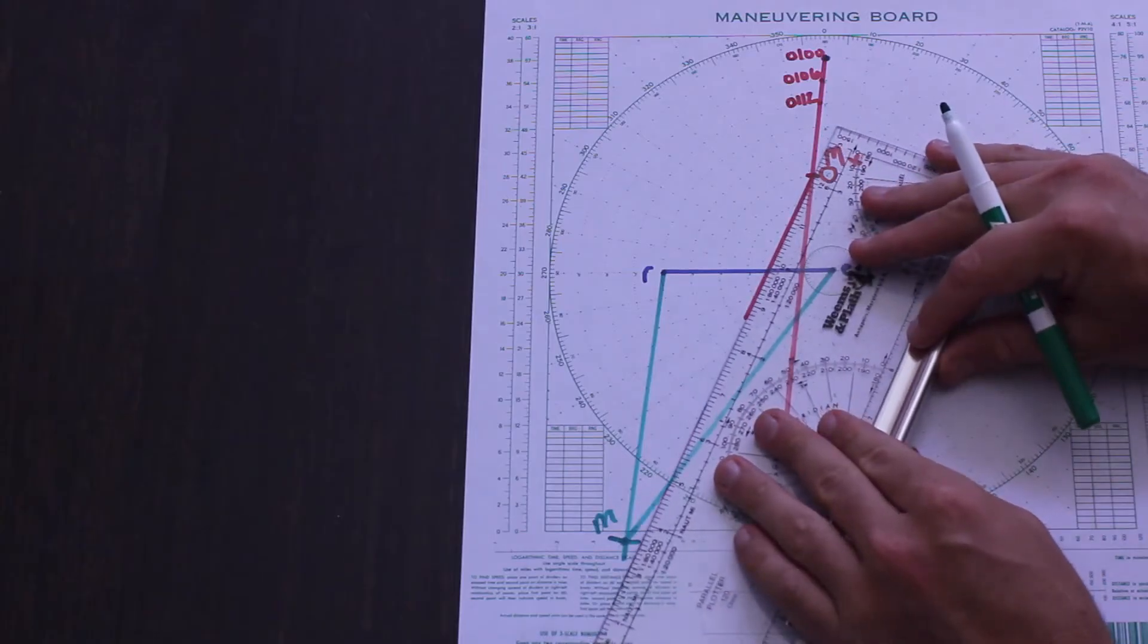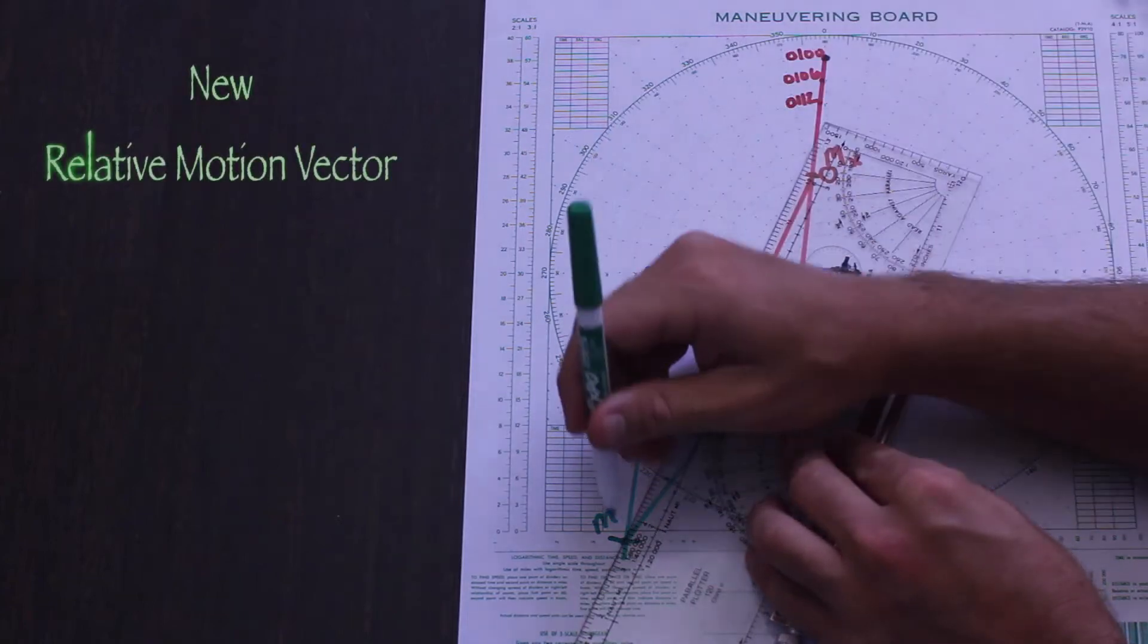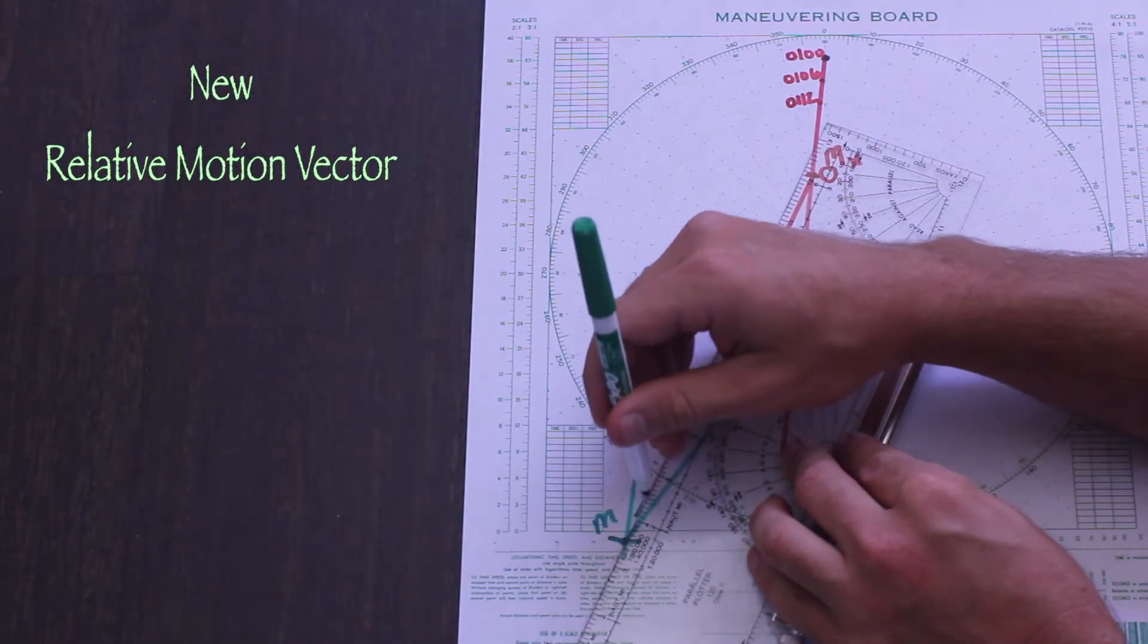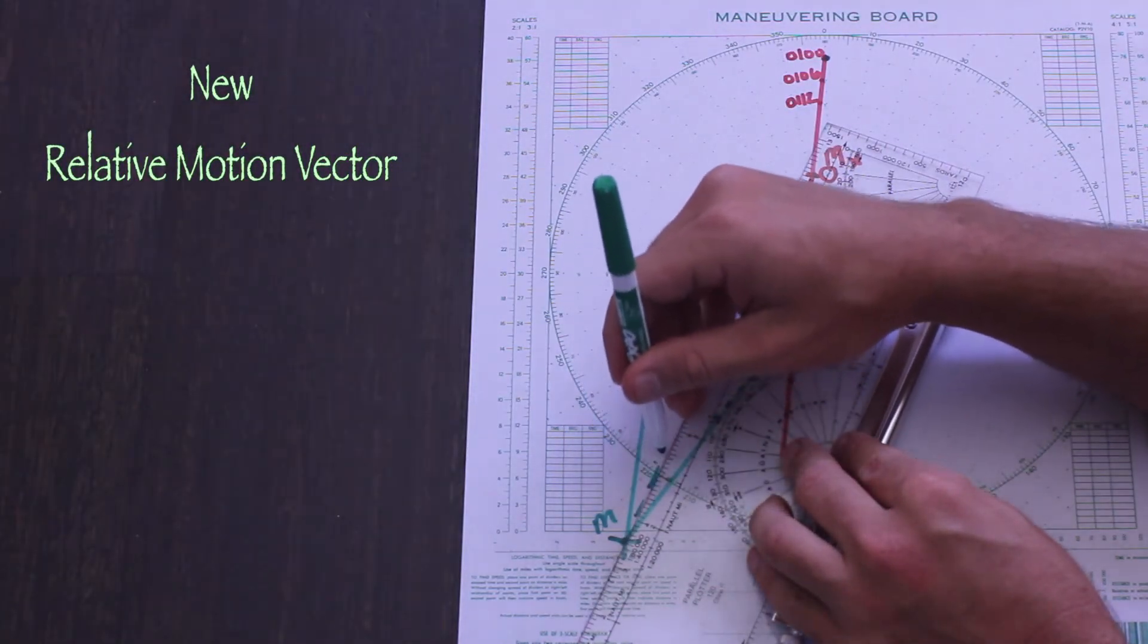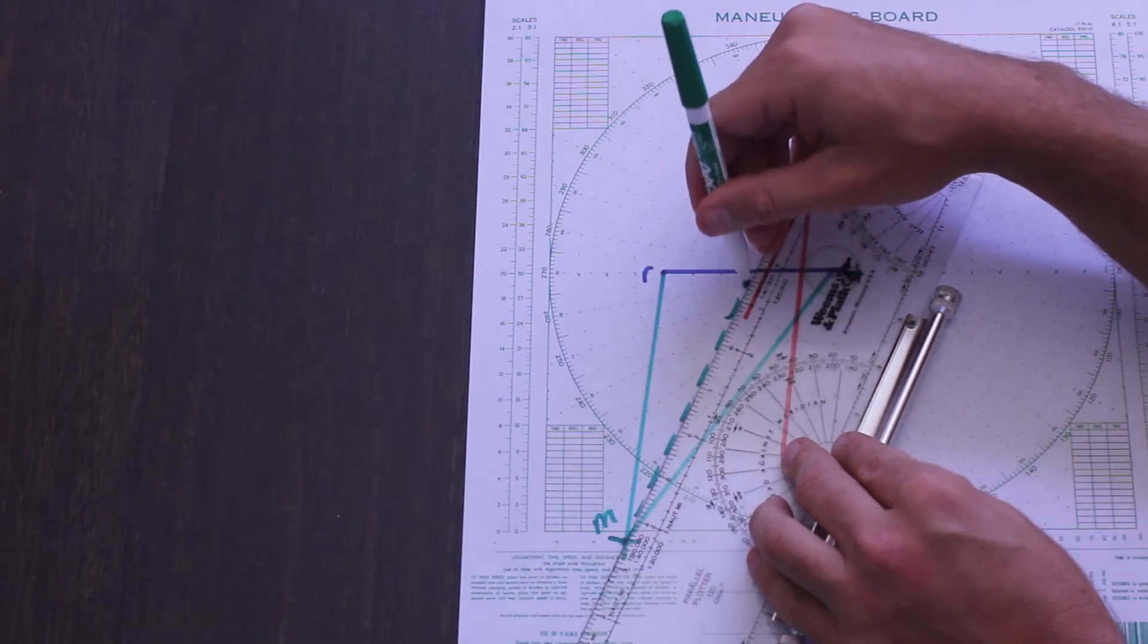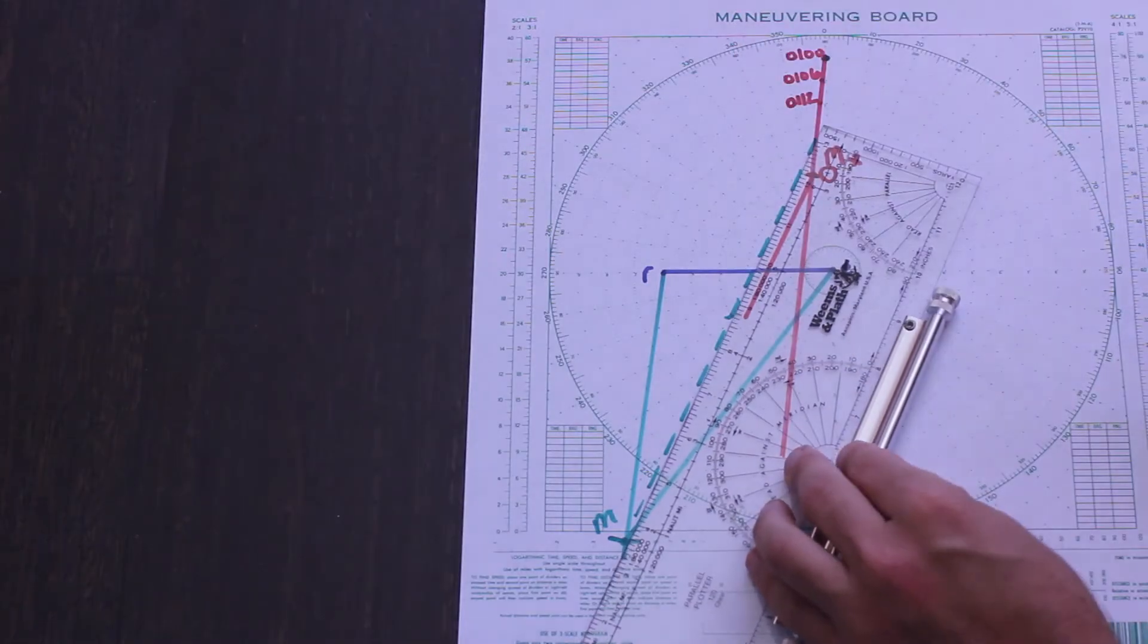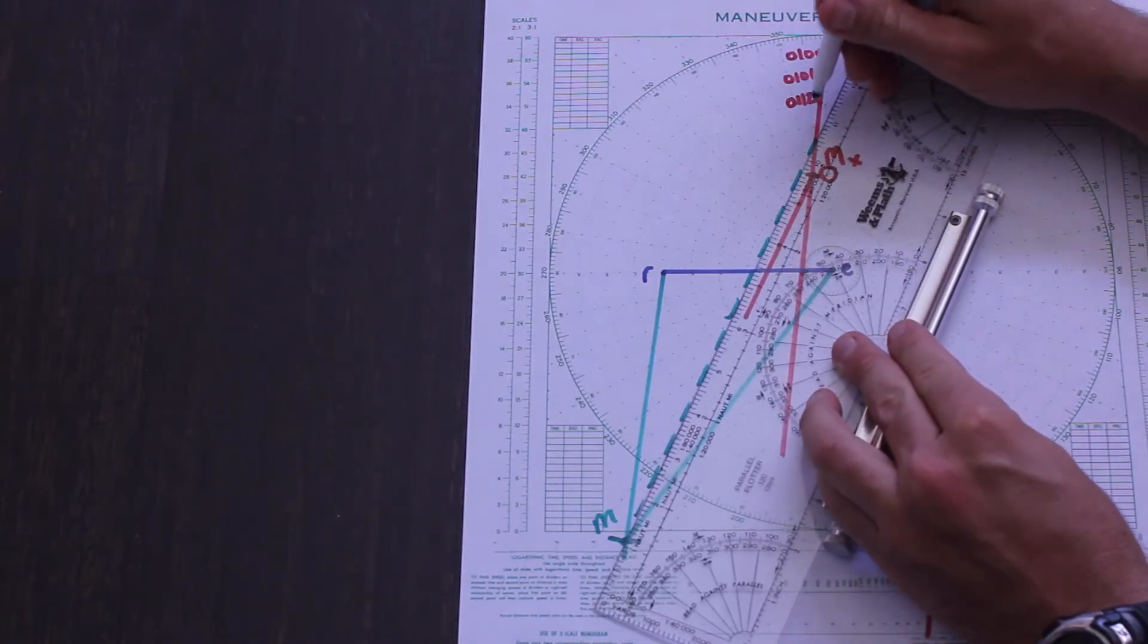Now here's the conceptual part. The contact is not going to change its course and speed, but we are. So we'll plot the new relative motion vector from M from the contact's true course and speed. And then we'll know what we have to do to make the triangle work. So we parallel the relative motion line to M and draw the new relative motion vector.